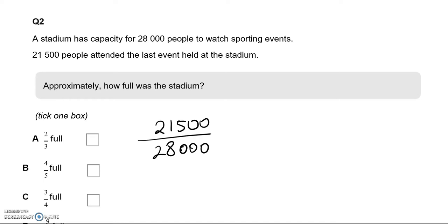I can round these off. What I'm going to do, looking at the numbers, I can see a 21 there and a 28. So I'm going to do 21 over 28. 21 is a multiple of 7 and 28 is a multiple of 7. So if I divide them both by 7, I'm going to get 3 at the top and 4 at the bottom. So this is approximately, not exactly, 3 quarters full, which is option C.